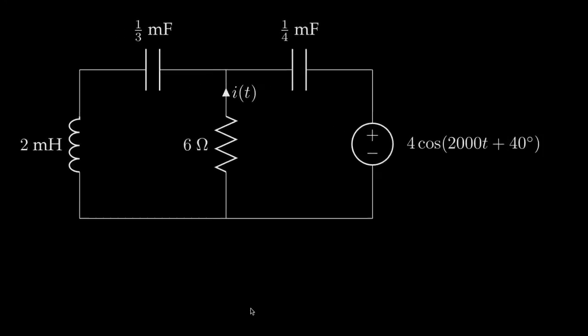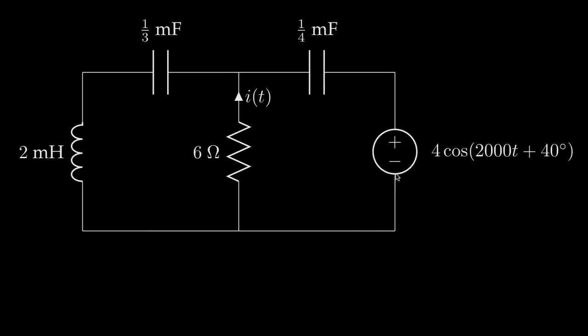For this lecture, we'll take a look at a circuit that has a sinusoidal voltage source, a resistor, an inductor, and two capacitors. The voltage source has a frequency of 2,000 radians per second, an amplitude of 4 volts, and a phase of 40 degrees. The resistor has a resistance of 6 ohms, the inductor has an inductance of 2 millihenries, and the capacitors have capacitances of one-third and one-fourth millifarads.